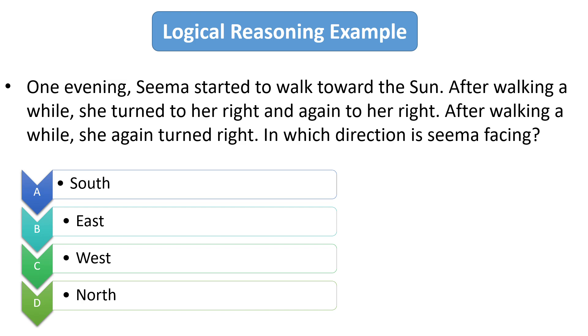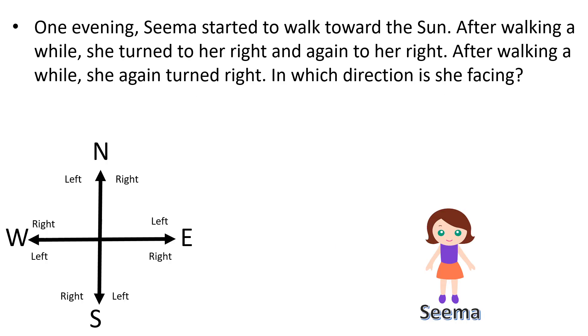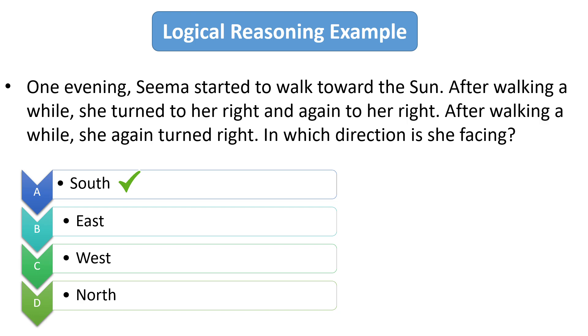This is the figure of direction. So let's assume this is Seema. Now according to question she started walking towards sun. Sun rises from the east, but she started walking in evening. So in evening the sun will be in the west direction. So Seema started walking towards the west, something like this. Then after walking she turned to her right, that means in the north direction. And again she turned to right, that means in the east direction. And again after walking a while she turned to the right, that means in the south direction. So right now she is facing to the south direction. So the answer is A which is south direction. So I hope you guys understand this solution.